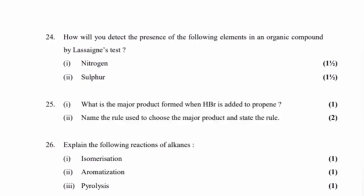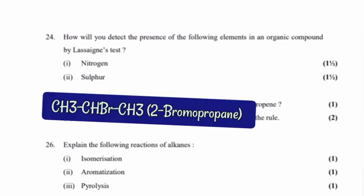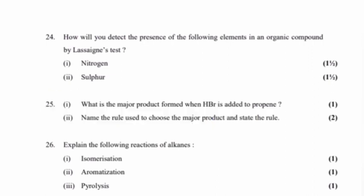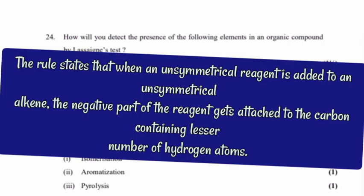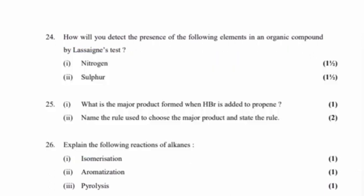Question 25, part 1: What is the major product formed when HBr is added to propene? Answer: 2-bromopropane. Part 2: Name the rule used to choose the major product and state the rule. Answer: Markovnikov's rule. The rule states that when an asymmetrical reagent is added to an asymmetrical alkene, the negative part of the reagent gets attached to the carbon containing less number of hydrogen atoms.